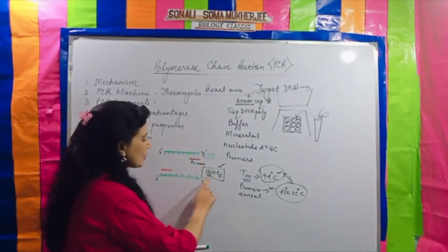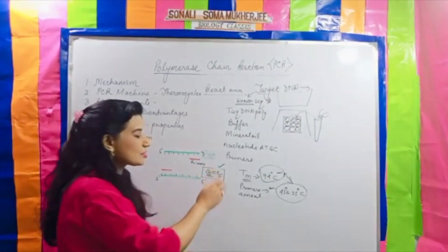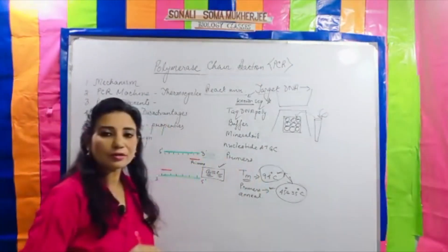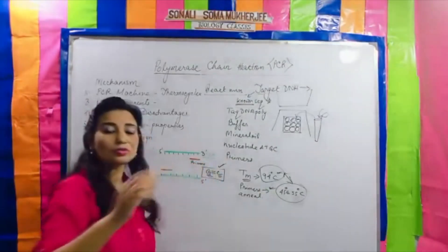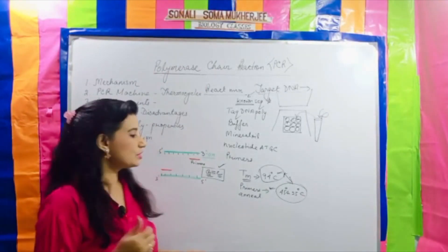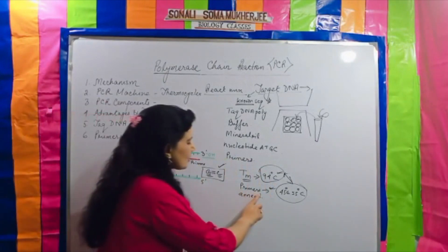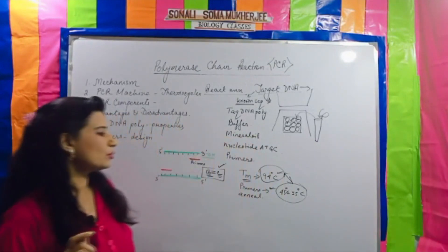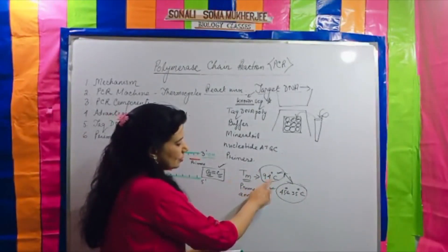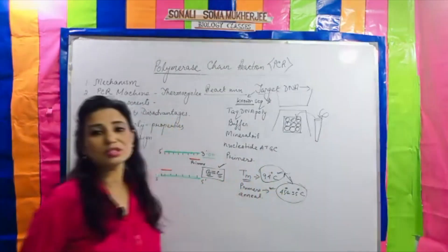Another point: between G and C there are three hydrogen bonds, so more GC content means more stability in the strand. To break that stability we need a higher temperature. So GC content determines the melting temperature of the DNA. We already know the melting temperature is 94 degrees centigrade, and the primer annealing temperature is 45 to 55 degrees centigrade. There is a big difference between these two temperatures.